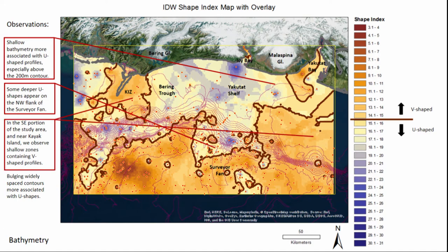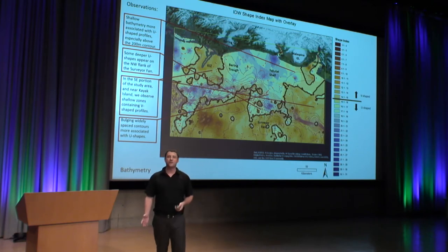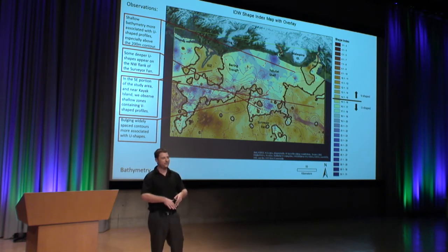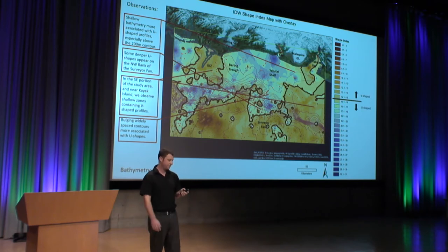In the southeast portion of the study area and near Kayak Island, we see shallow zones containing V-shaped profiles. In areas where we have widely spaced bulging contours, this is more often associated with U-shapes as well. One hypothesis for getting these U-shapes besides glacial activity is that these are actually slide scars, which tend to make a U-shape.